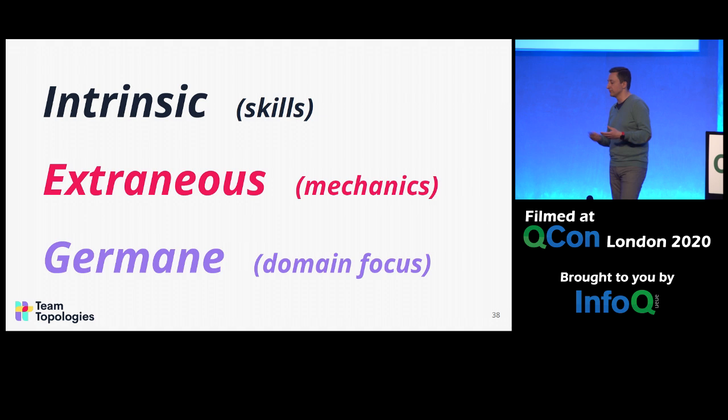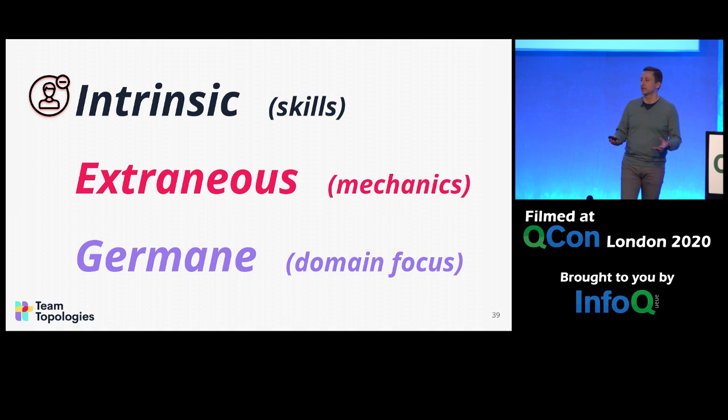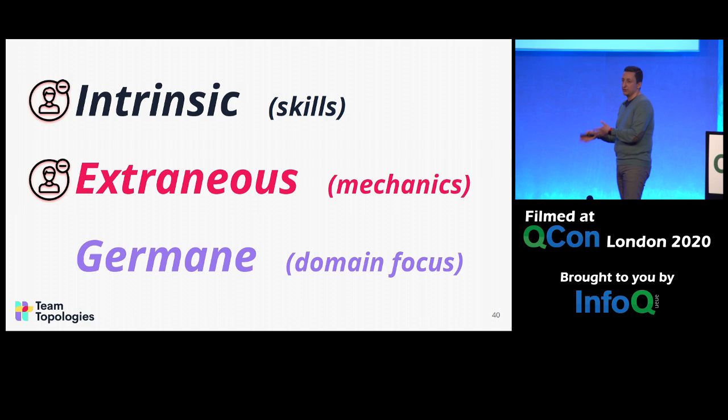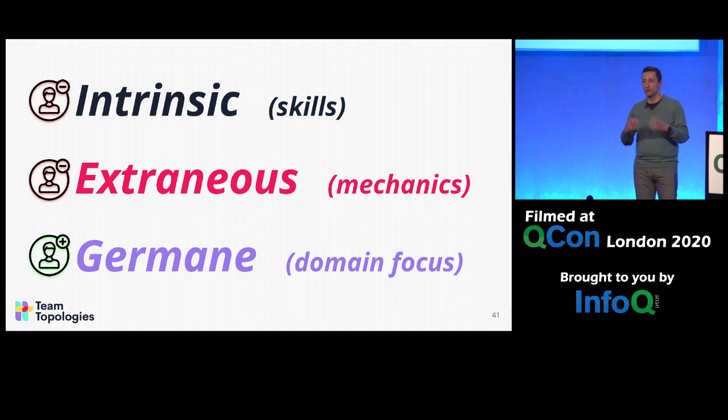We want to minimize intrinsic cognitive load — we know how to do that through training, pair programming, mentoring, code reviews, all these techniques that help upskill people. We also want to minimize the extraneous cognitive load, and this is where Team Topologies and in particular platform teams come in. The point is to make as much memory available to focus on the germane cognitive part.